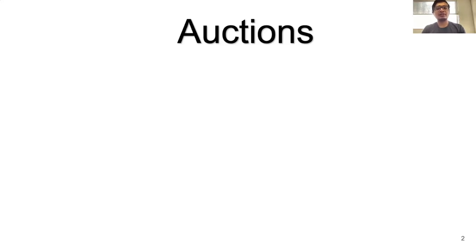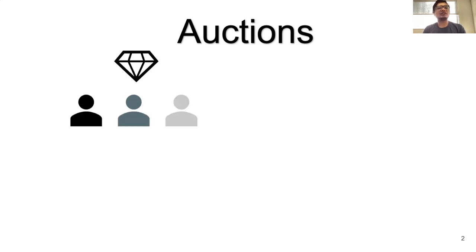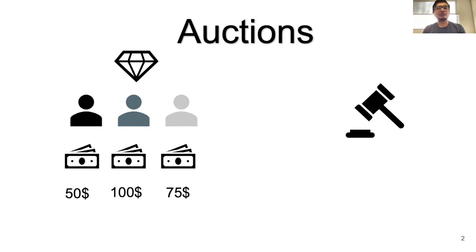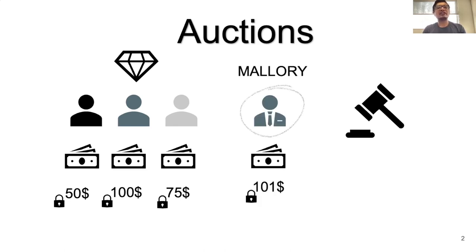Let's begin with a motivating example of auctions. We have three parties, each wanting to bid for an art piece. Naturally, the party who bids the maximum amount should get the artwork. But imagine we have to do this over an insecure channel — say, the internet — for transparency or convenience reasons. A natural idea is to encrypt our bids, since encryption hides the plaintext.